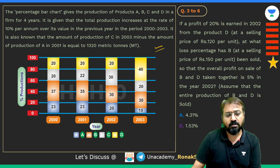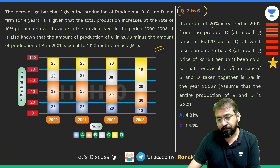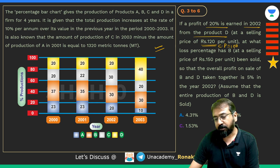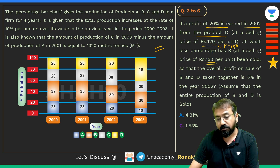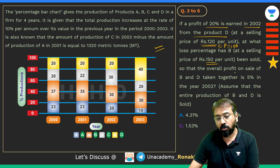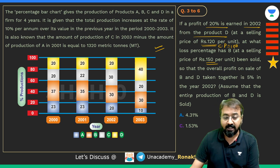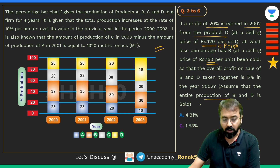Now let's look at another tricky question. If a profit of 20% is earned in 2002 from product D at a selling price of 120, and a certain portion of B has been sold such that the overall profit on sale of B and D together is 5% in 2002, assuming the entire production of B and D is sold — we need to find the loss percentage for B.